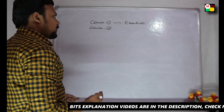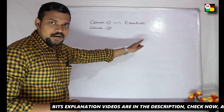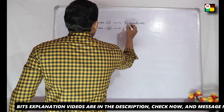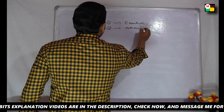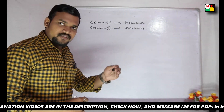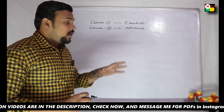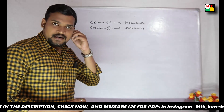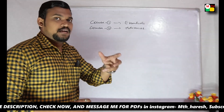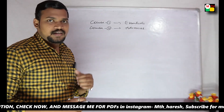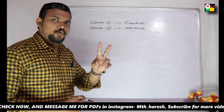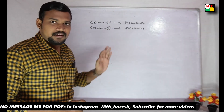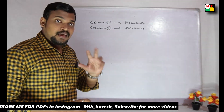Looking at course one, the paper name is 'Essentials of Mathematical, Physical and Chemical Sciences' — we simply call it the Essentials paper. Next, looking at course two, the paper is called 'Advances' — full name 'Advances of Mathematical, Physical and Chemical Sciences' — we call it the Advances paper.